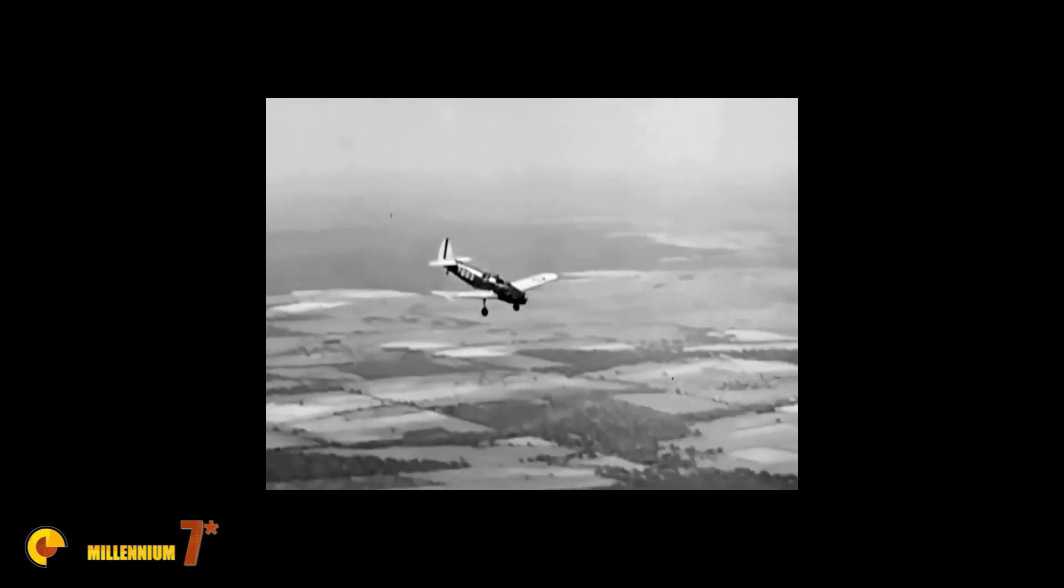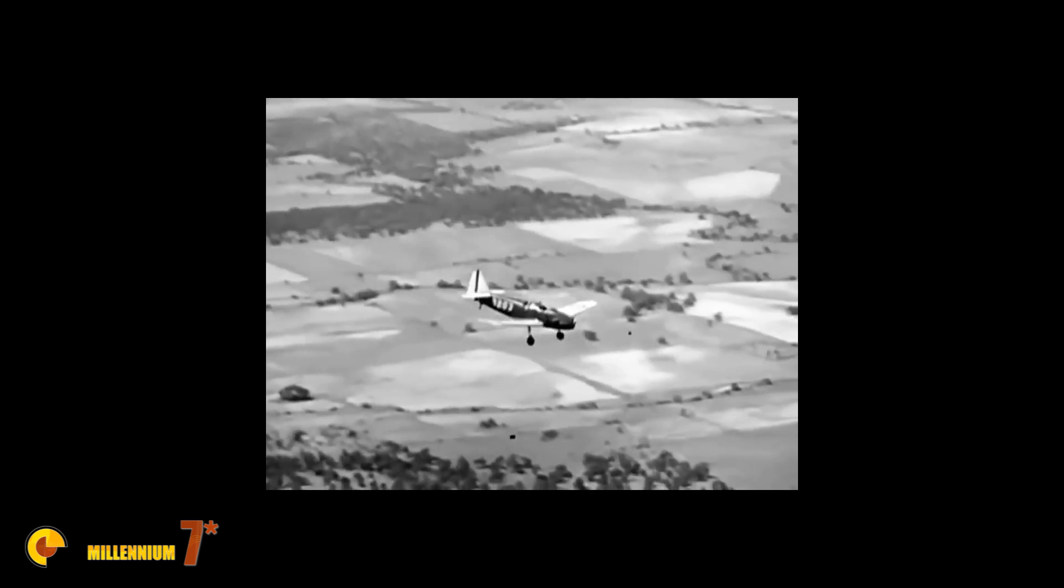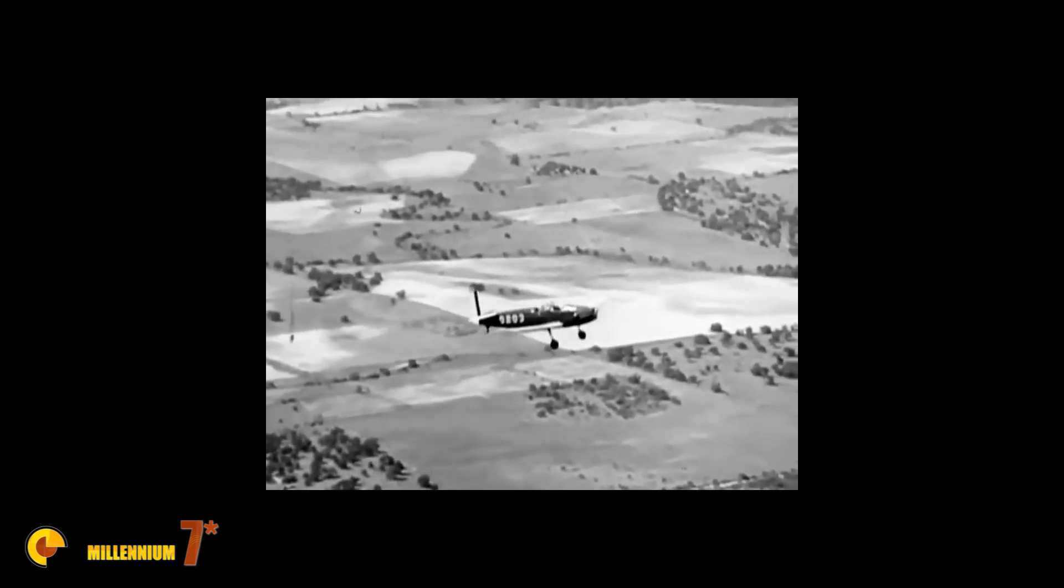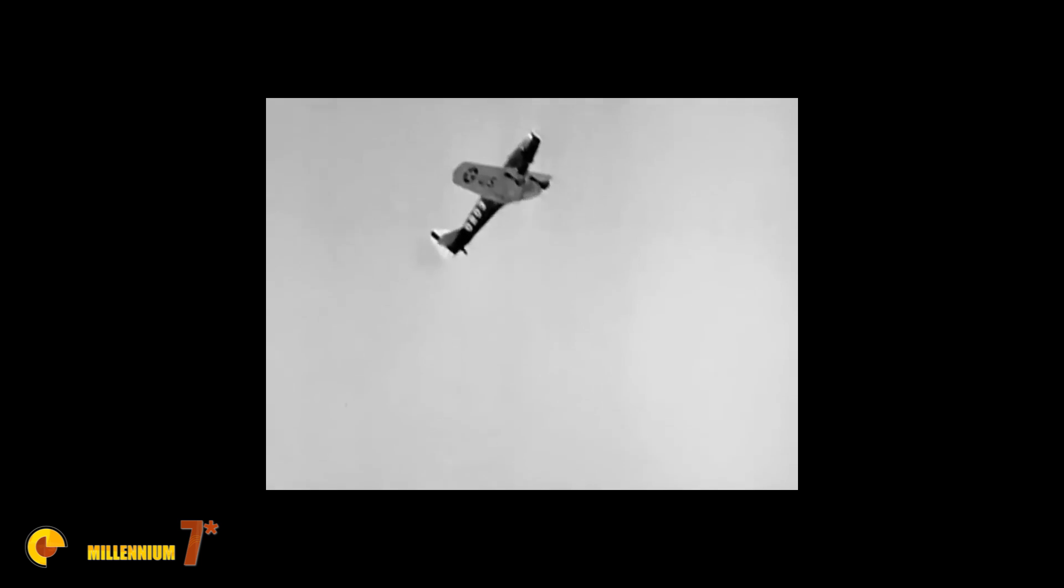Easiest to perform, and fundamentally a basic maneuver on which more difficult acrobatics depend, is the normal loop. When the loop is well done, the airplane outlines a nearly perfect circle in the sky.